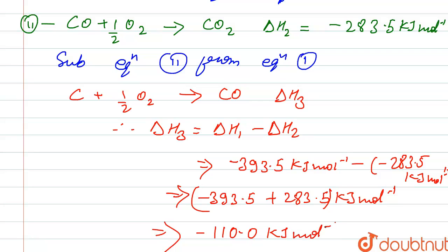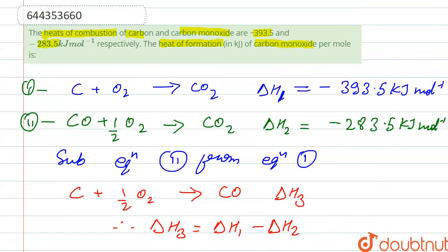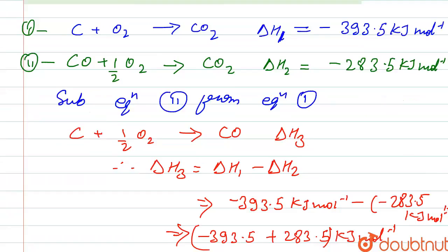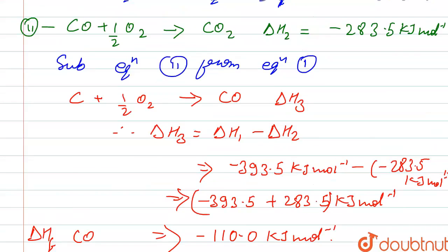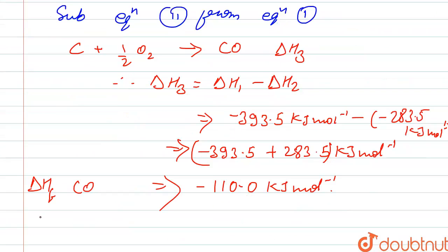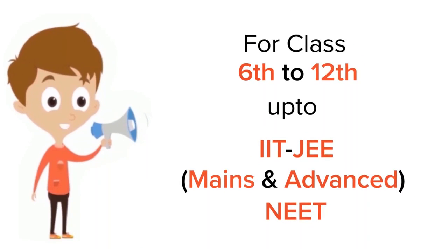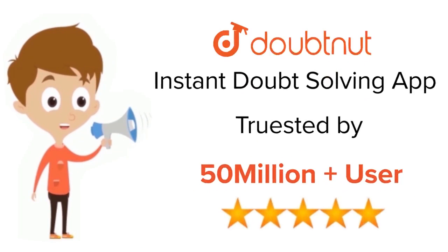So this is the heat of formation of carbon monoxide, which is minus 110 kilojoule per mole. Thank you. For class 6–12, IIT JEE, and NEET level, trusted by more than 5 crore students — download DoubtNet today.